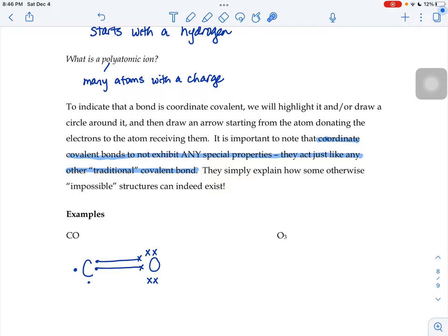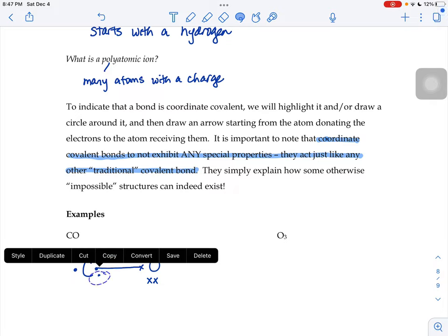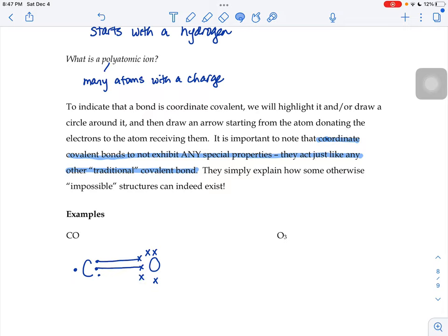The carbon would like to share more since it only has 6 electrons around it right now, but the oxygen doesn't want to share more. If we tried to slide this one up into the middle, our oxygen would now have 9. That's too many. And we still haven't fixed the carbon. So that's not going to work.